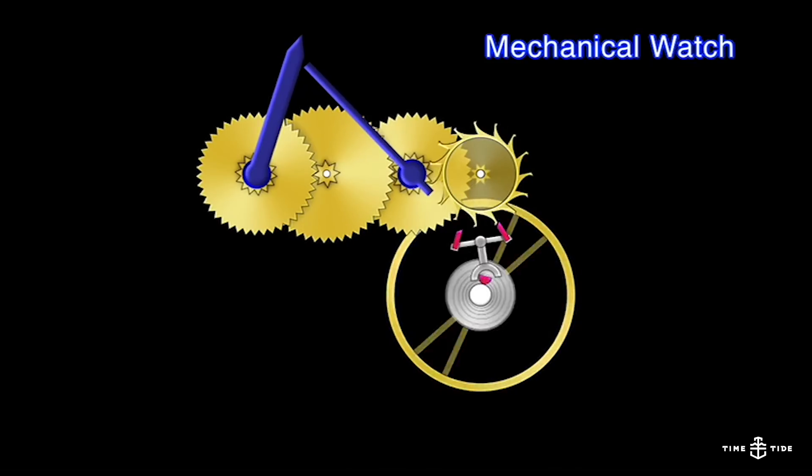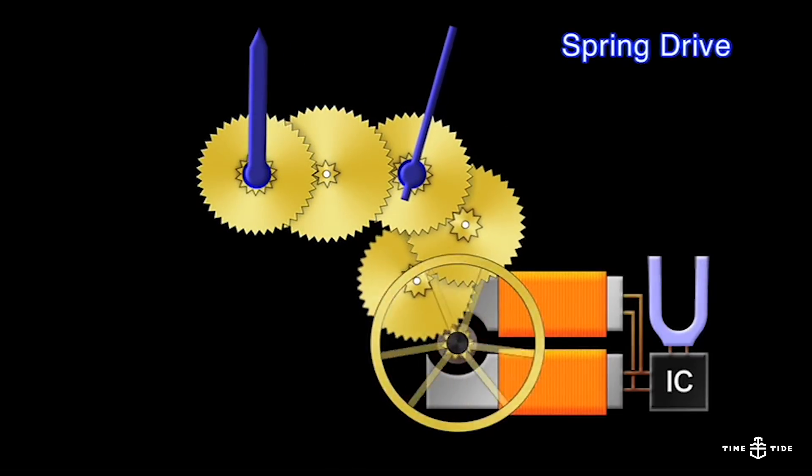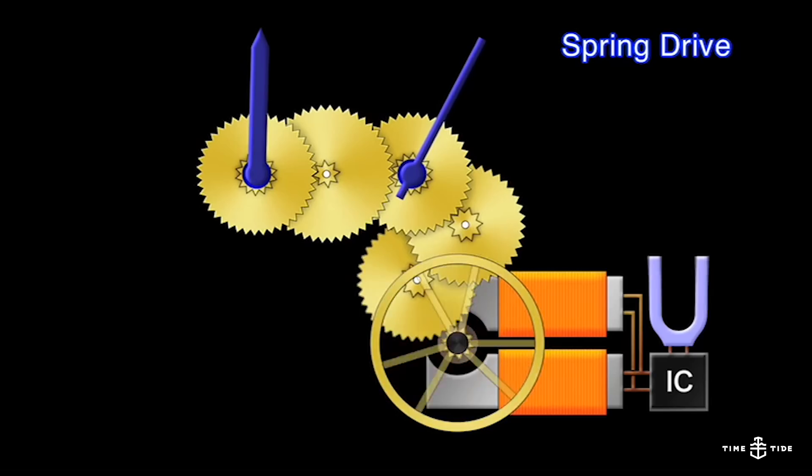But instead of an escapement you find an ingenious piece of technology called the trisynchro regulator which uses kinetic, electrical and magnetic power to regulate the rate of the watch.